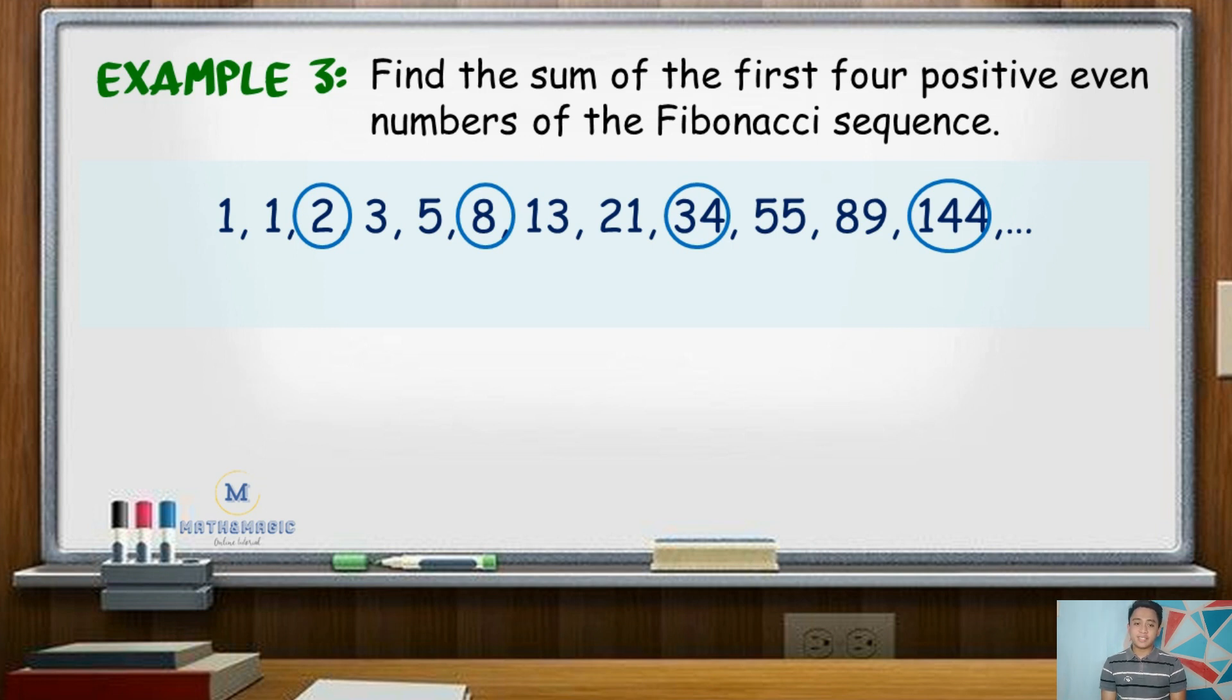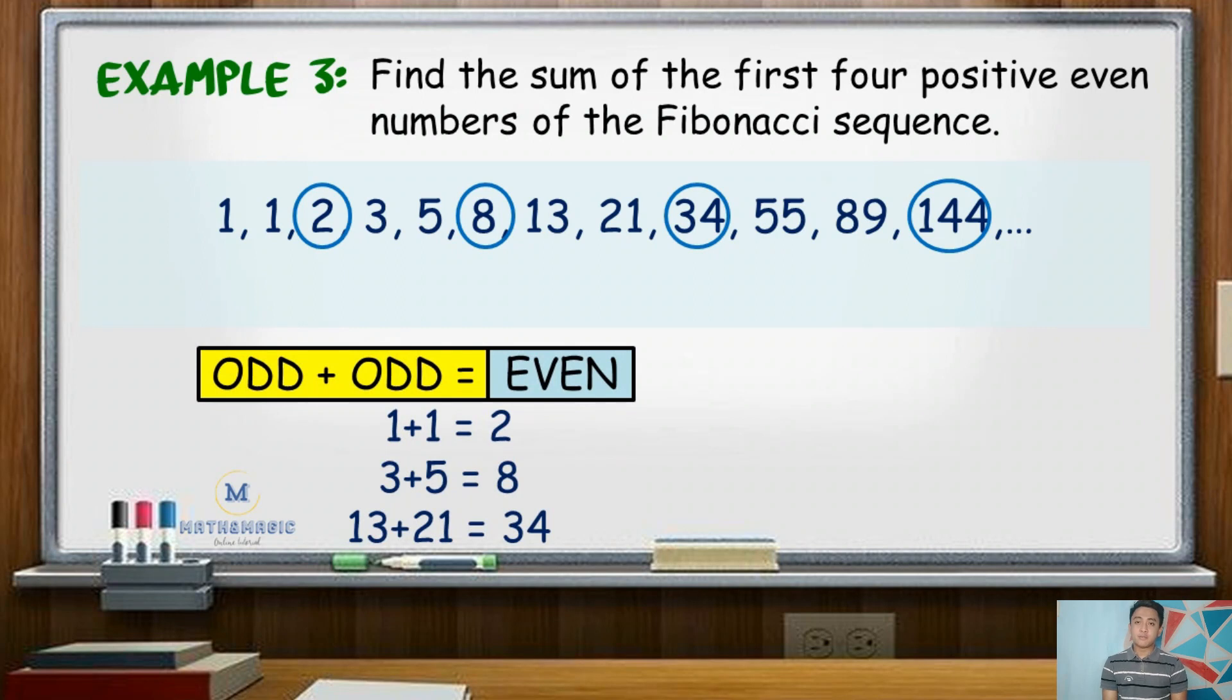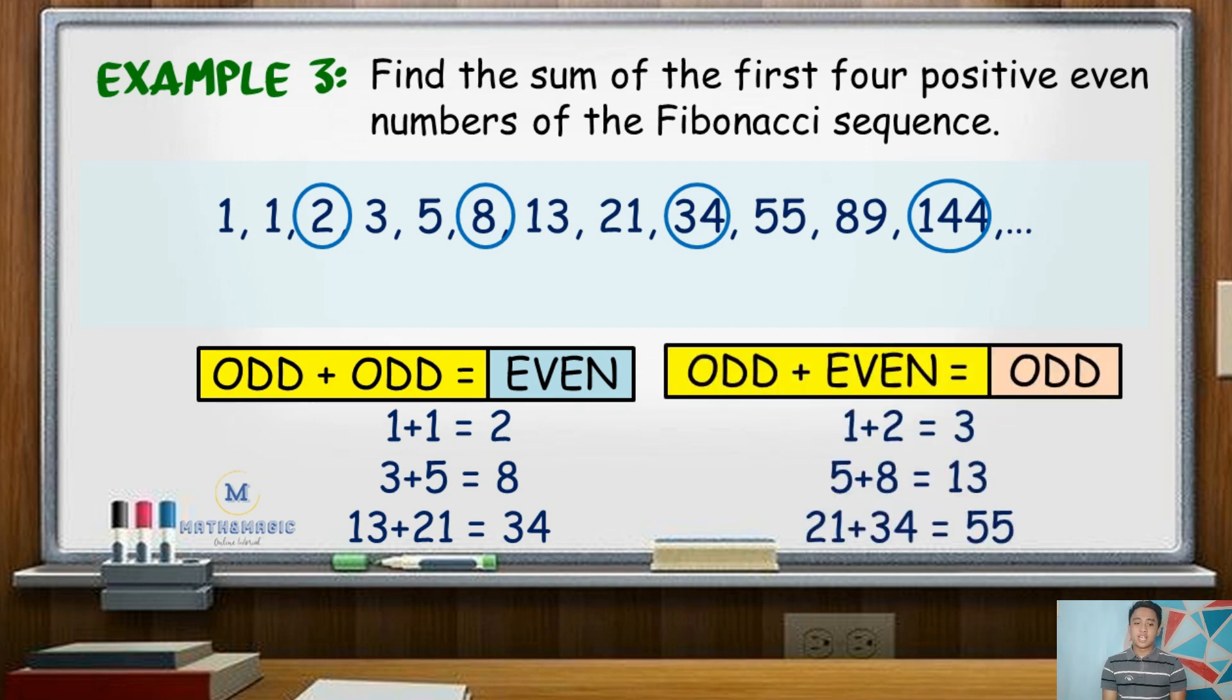This pattern came from the concept that when two odd numbers were added, the sum is even. Meanwhile, for the in-between terms, they are odd because the sum of an odd and an even number is always an odd number.